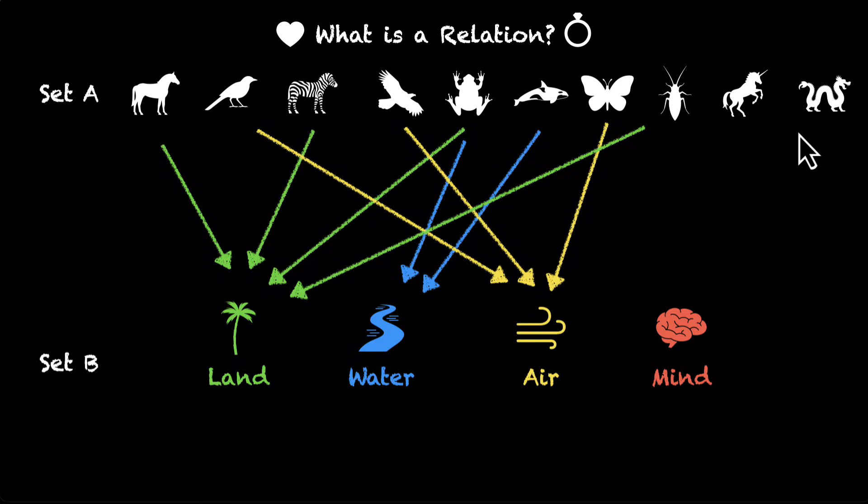Cockroaches also land. Unicorn and dragon. Okay. They don't live anywhere because they're not real, so they live in our minds. Why not? Okay. So what do we have here?